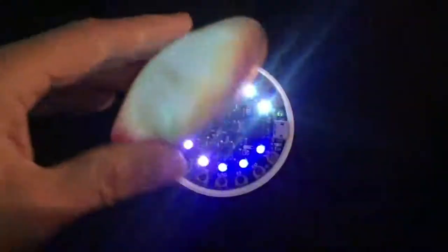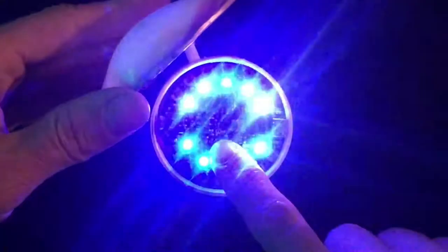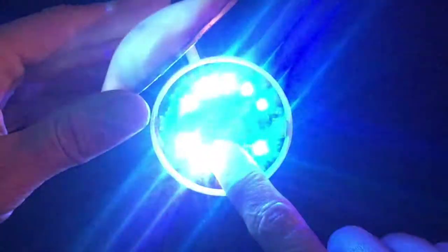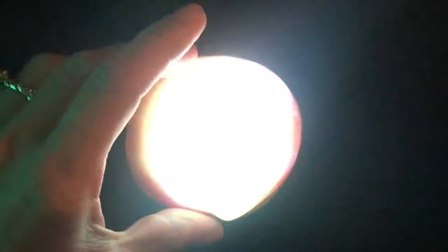We've even included a sound reactive mode so the necklace will sing along with your voice. Circuit Playground's right button changes the brightness from subtle to blinding.